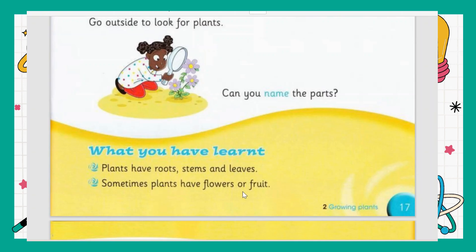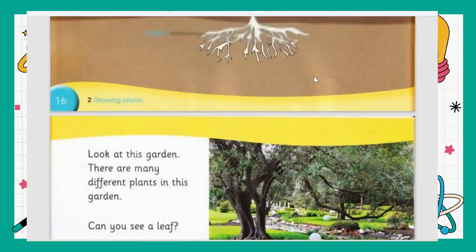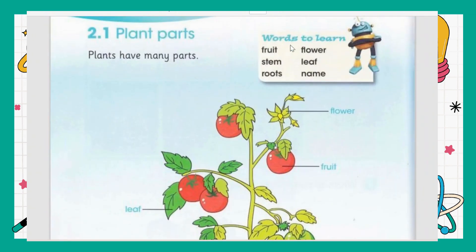What we have learned: plants have roots, stems, and leaves. Sometimes plants have flowers or fruits — flowers and fruit are not necessary for every plant. A simple plant may not have any fruit or vegetable; it will only have flowers, leaves, and a stem. Sometimes plants do not have flowers — they only have fruits. But plants must always have roots, stems, and leaves.